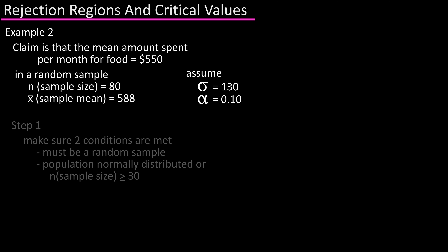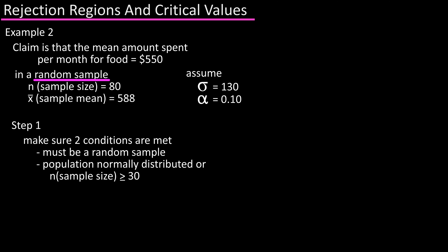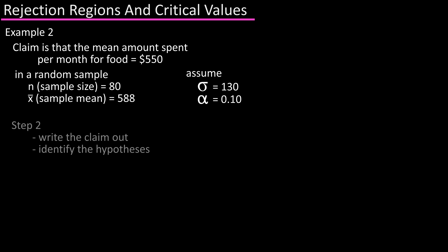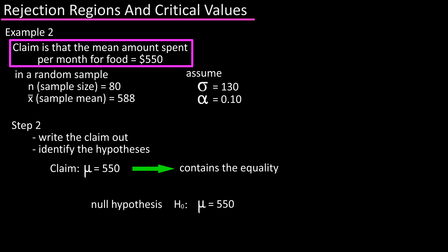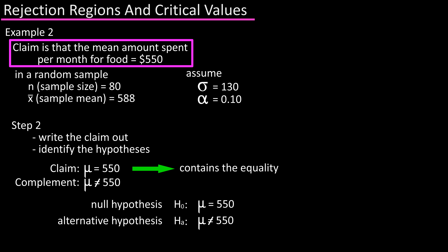Step one: it is a random sample and n, the sample size, is greater than or equal to 30, so we're good. Step two: the claim is that mu equals 550. The null hypothesis contains a statement of equality, so H-sub-zero is mu equals 550. The alternative hypothesis contains a statement of inequality, so H-sub-a is mu does not equal 550.